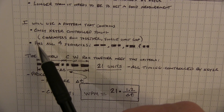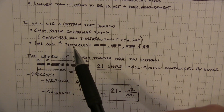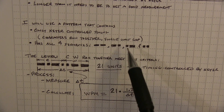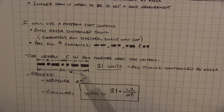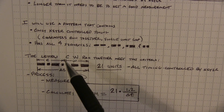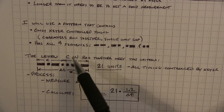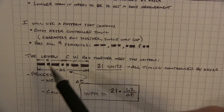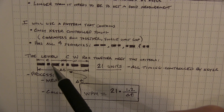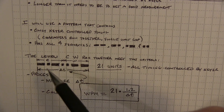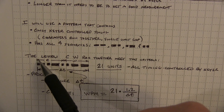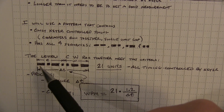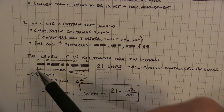I also want to ensure that the sequence I send has all possible element combinations: a dah followed by a dah, a dah followed by a dit, a dit followed by a dah, and a dit followed by a dit. Conveniently, the letters C and W, run together with no spacing other than the normal spacing between elements within a character, contains all those combinations — a dah followed by a dit, a dit followed by a dah, two dits and two dahs. So if I send the letter C immediately followed by W without creating a space between them, I can measure how long it takes that sequence to happen.